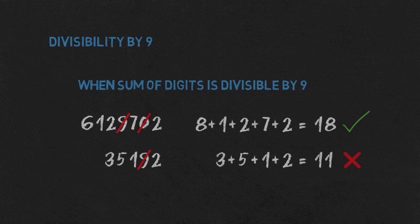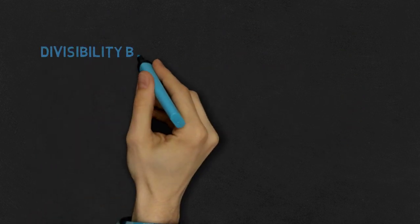And those are all single-digit dividers! I hope you like these methods and they will be useful for you. Oh right — there's one more single-digit number I didn't cover: 0. So a number is divisible by 0 when...